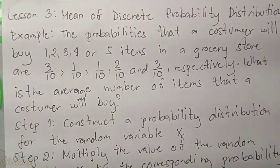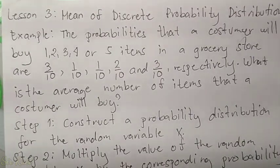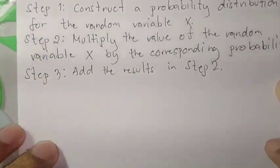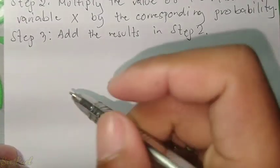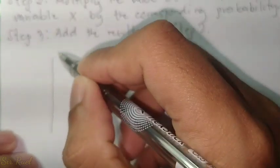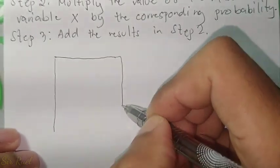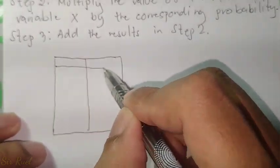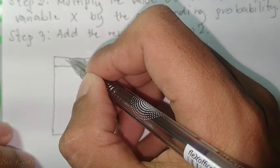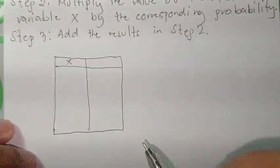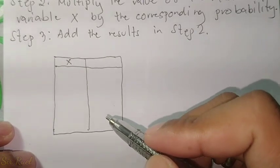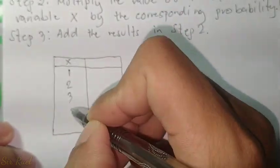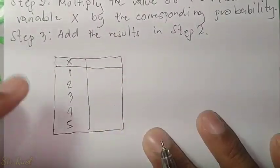To find the mean of a discrete probability distribution, our first step is to construct a probability distribution for the random variable x. So let's label the first column as x — this is the number of items that a customer will buy. The number of items the customer might buy will be 1, 2, 3, 4, or 5, as stated in the problem.